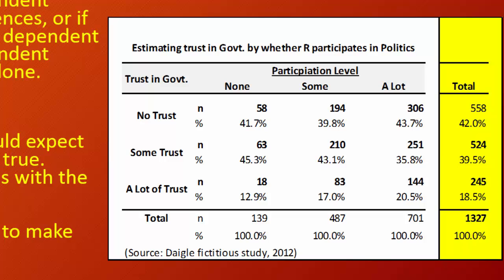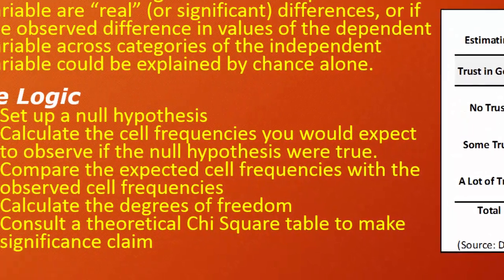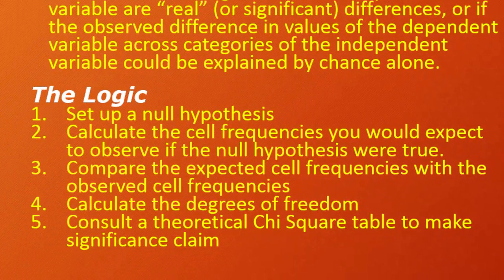We set up a null hypothesis, assuming there's no relationship in the population. We calculate the cell frequencies we would expect to observe if the null hypothesis were true, then compare the expected cell frequencies with the observed cell frequencies. The greater these differences, the larger chi-square becomes, and the lower the risk of making a type 1 error — rejecting the null hypothesis when we should have failed to reject the null.